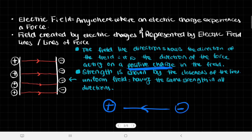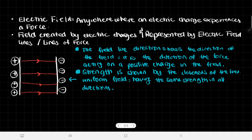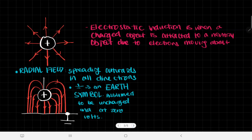The strength of the electric field is shown by the closeness of the lines — the closer together the lines are, the stronger the field. You can see here they're about the same spacing. This is called a uniform field, meaning it has the same strength in all directions. The field lines are parallel and equally spaced, but that's not the case for other electric fields.